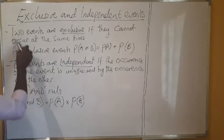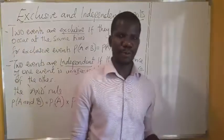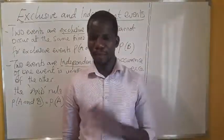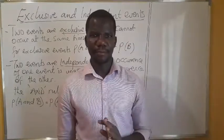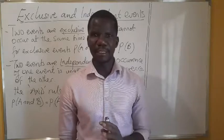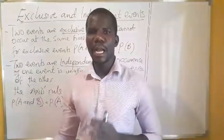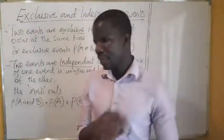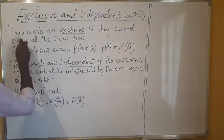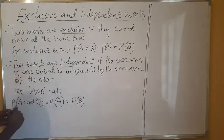Exclusive events: when two events are exclusive, they cannot occur at the same time. If one of them occurs, the other will not take place. For instance, for one paper, if you write a test in mathematics, passing and failing are mutually exclusive events — they cannot occur at the same time. If one occurs, the other will not.